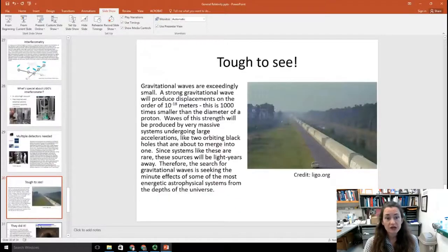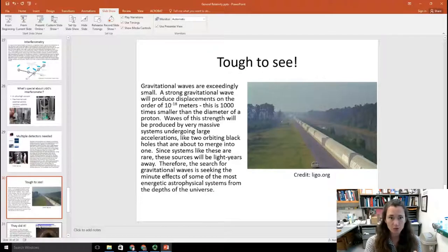Now, gravitational waves are really, really hard to see because they're exceedingly small. How small, you might ask. How small is it? Well, a strong gravitational wave will produce displacements on the order of 10 to the minus 18 meters. That's nothing. It's 1,000 times smaller than the diameter of a proton, for heaven's sake. So waves of this strength are going to be produced by massive systems undergoing large accelerations, like the two orbiting black holes that merged into one that we saw in 2015. Since systems like these are rare, the sources are going to be light years away. Thank heavens. I wouldn't want two black holes to collide near me. But anyway, the search for gravitational waves is seeking the minute effects of some of the most energetic astrophysical systems from the depths of the universe.